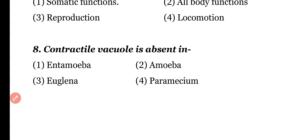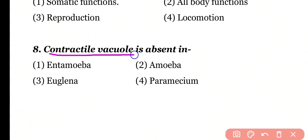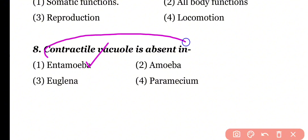Question number 8: Contractile vacuole is absent in — Entamoeba, Amoeba, Euglena, or Paramecium? Correct answer is option 1. Entamoeba histolytica lives in an isotonic environment, that's why the contractile vacuole is absent in it.